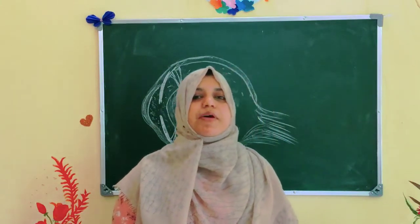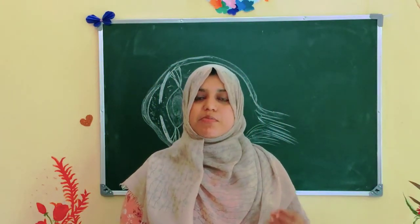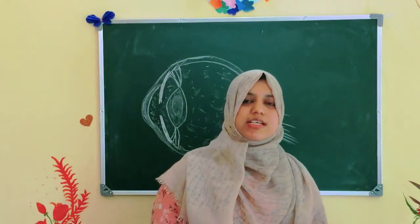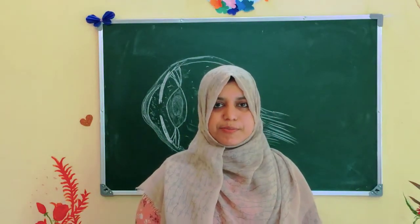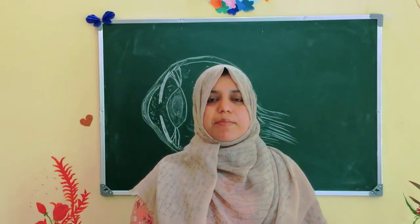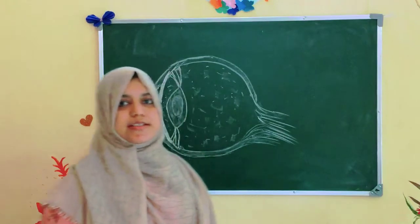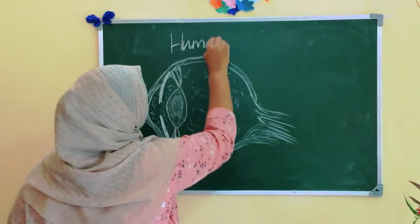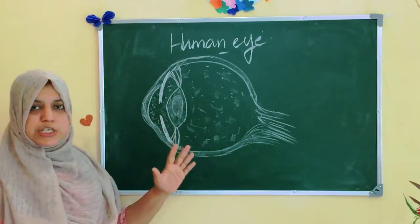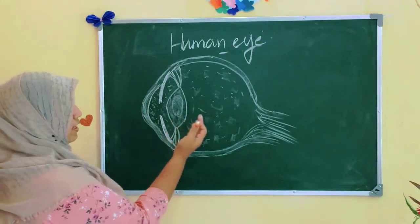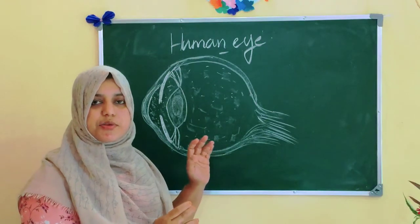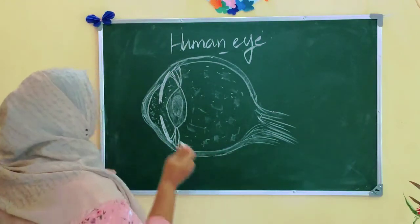Now I am going to discuss about the human eye. The human eye is the most valuable and sensitive sense organ. It enables us to see the wonderful world and colors around us. Our human eye is roughly spherical in shape and the diameter is about 2.3 centimeters. Here I have drawn a structure of the human eye. The front part of the human eye is a transparent part named the cornea.